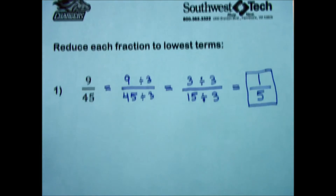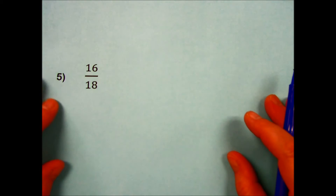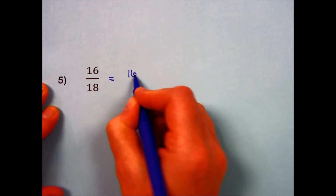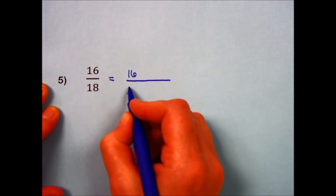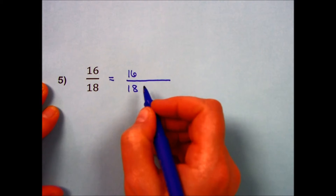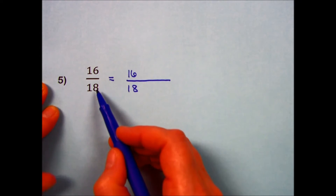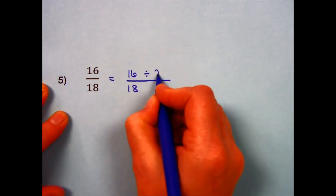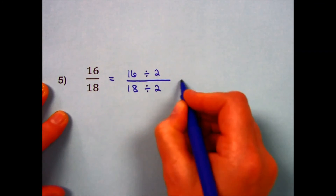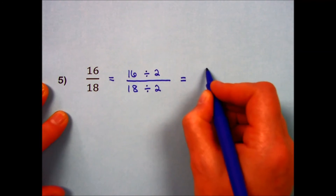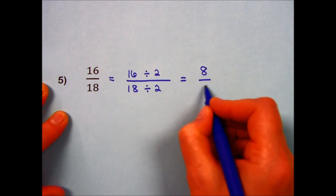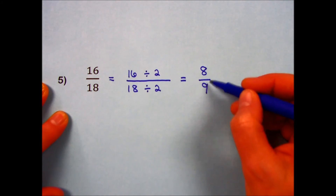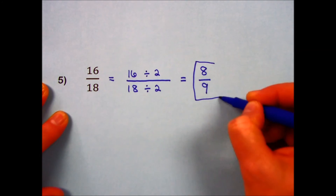Let's try one more together — number 5: 16 over 18. I write my original fraction and leave extra space for showing the division. They're both even, so I'm going to divide each of them by 2. 16 divided by 2 is 8, and 18 divided by 2 is 9. These numbers do not have any factor that can be divided into both of them, so this answer is complete: 8/9.